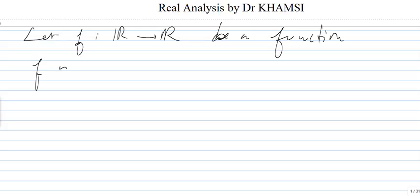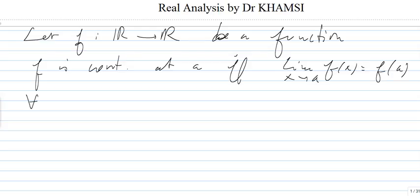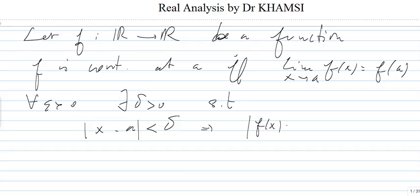First of all, remember that f is continuous at A if and only if the limit of f(x), when x goes to A, exists and is equal to f(A), which gives us that for every epsilon, there exists delta such that |x - A| < delta implies |f(x) - f(A)| < epsilon.